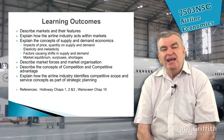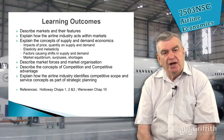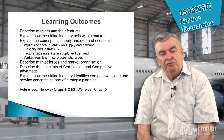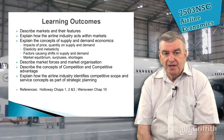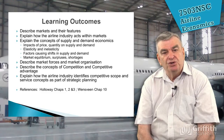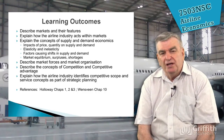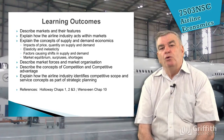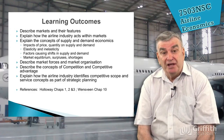In the first lecture we said it's really hard to distinguish one airline from another when you're competing for the same employees, using the same aircraft bought from the same markets, and often flying exactly the same routes. So how do you distinguish yourself? We'll explain how the airline industry identifies competitive scope and service concepts as part of strategic planning — for example, offering a bit more baggage allowance or a meal on board at the same price.